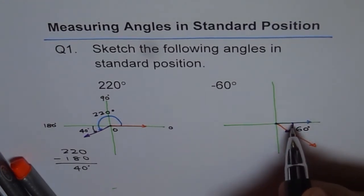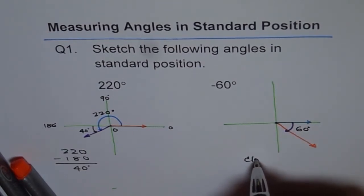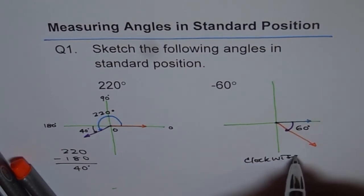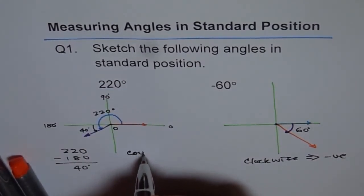Now since it is clockwise, I don't really have to write minus 60. So we say clockwise implies negative angle. And this is positive, that means it is counterclockwise.